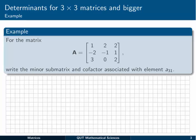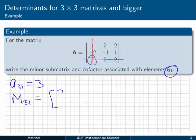Okay, so the first thing we want to do is identify the element itself, A31. A31 is the third row and first column, so that's just that number 3 there. So we can write that straight down. A31 is equal to 3. For the minor submatrix, we need to delete row 3 and column 1 from A. So that's going to leave us with M31 equal to the 2 by 2 matrix 2, 2, minus 1, 1.